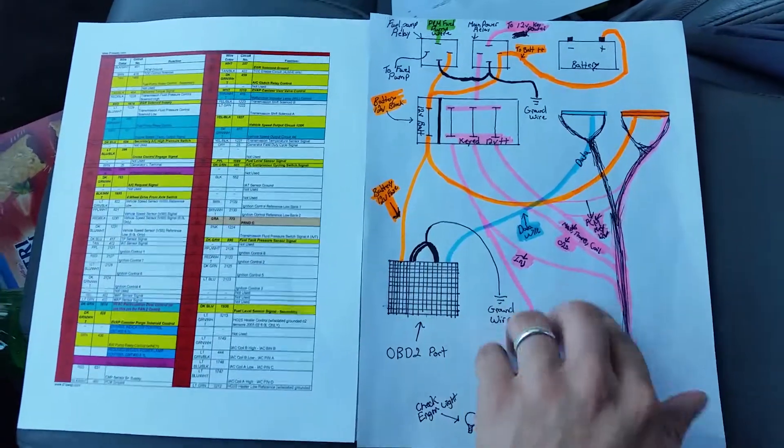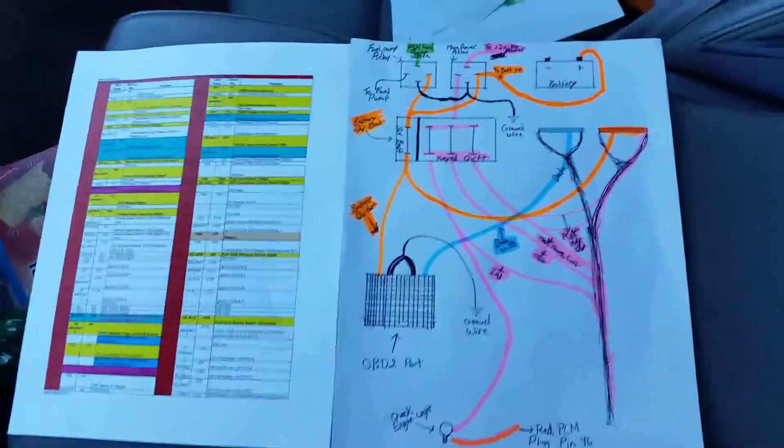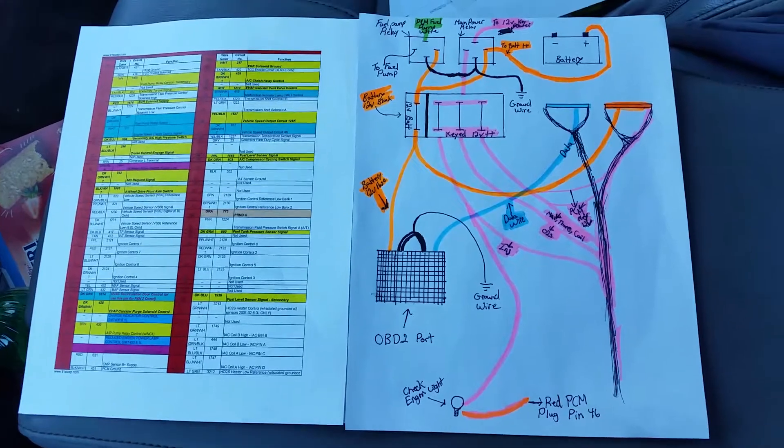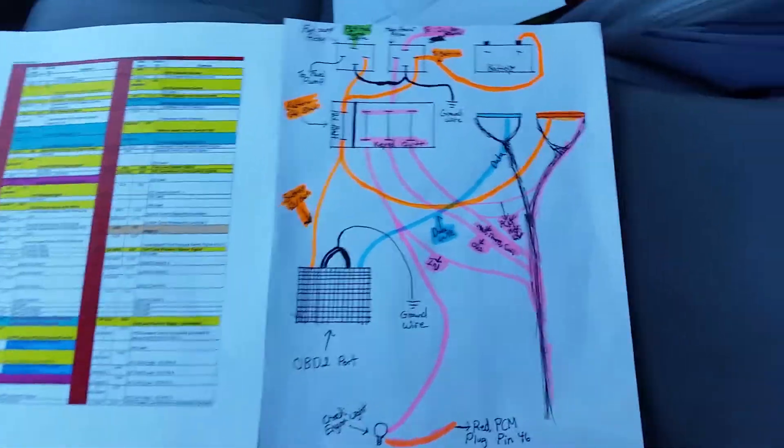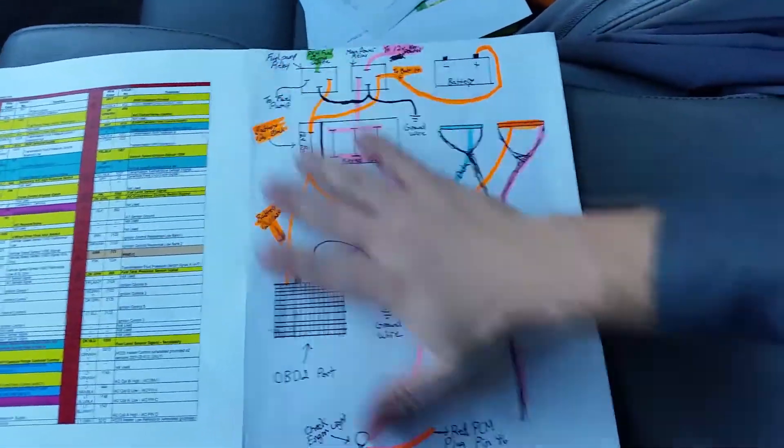I'm gonna explain how this works. This is for a 99 to 02 drive-by-cable system. First of all, up top, I'll explain what these components are and then what wires run where.